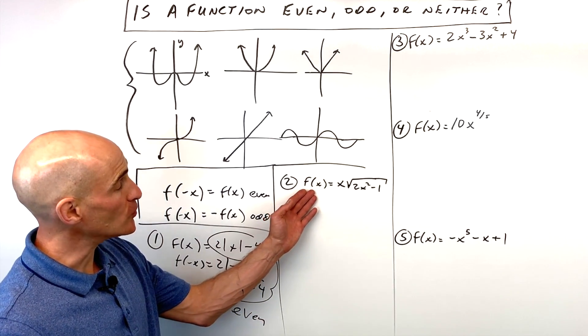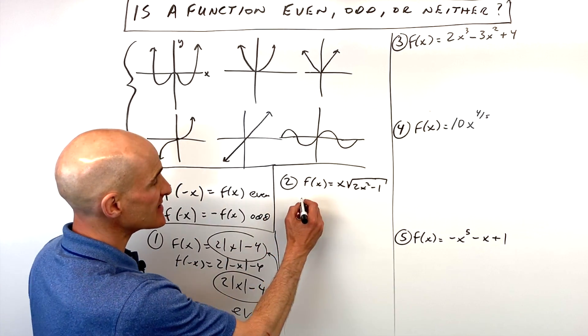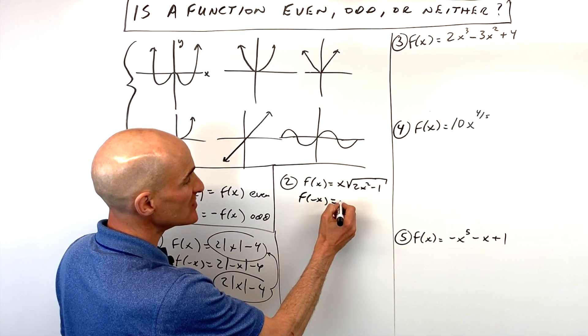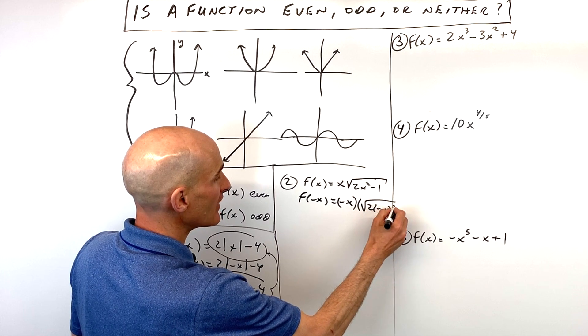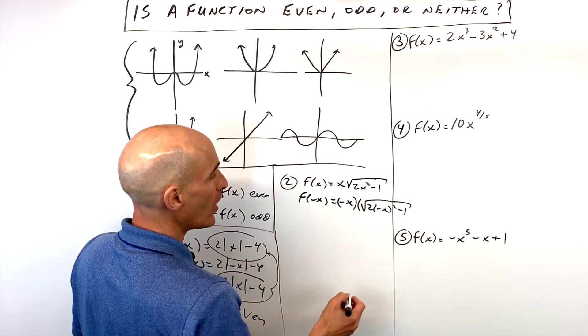Let's look at number 2. This one here, same process. All you're doing is wherever you see x, just put negative x in. So this is going to be 2 times negative x squared minus 1.